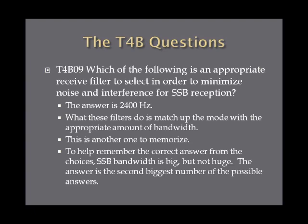Which of the following is an appropriate receive filter to select in order to minimize noise and interference for single sideband reception? The answer is 2400 Hz, and this is one you probably should memorize. These filters match up the mode with the appropriate bandwidth. The memory trick for this question is that single sideband width is big, but it's not huge — and the answer is the second biggest number of the possible answers on the exam.